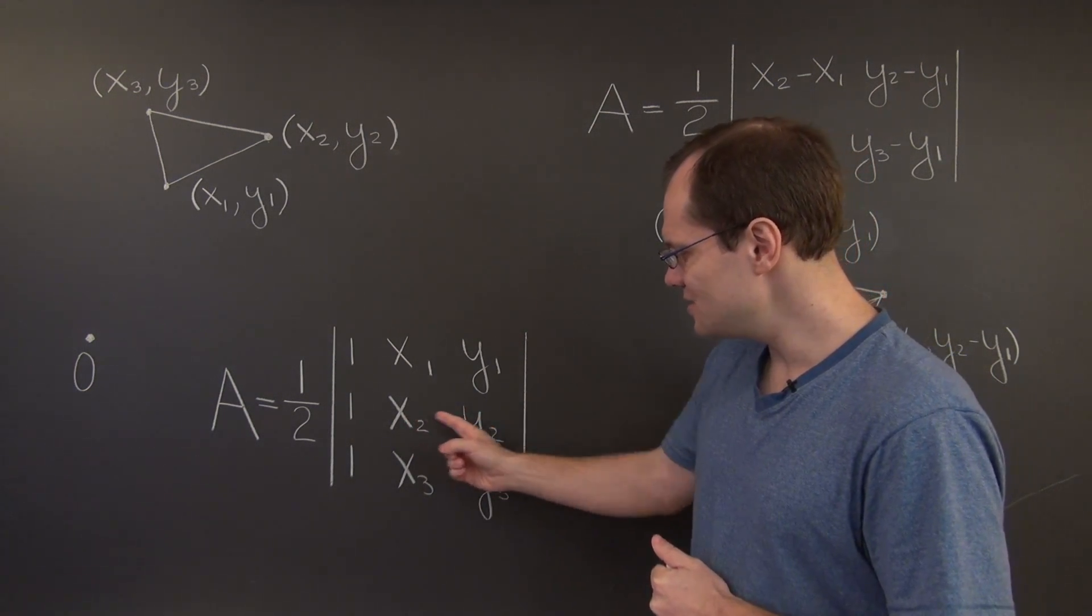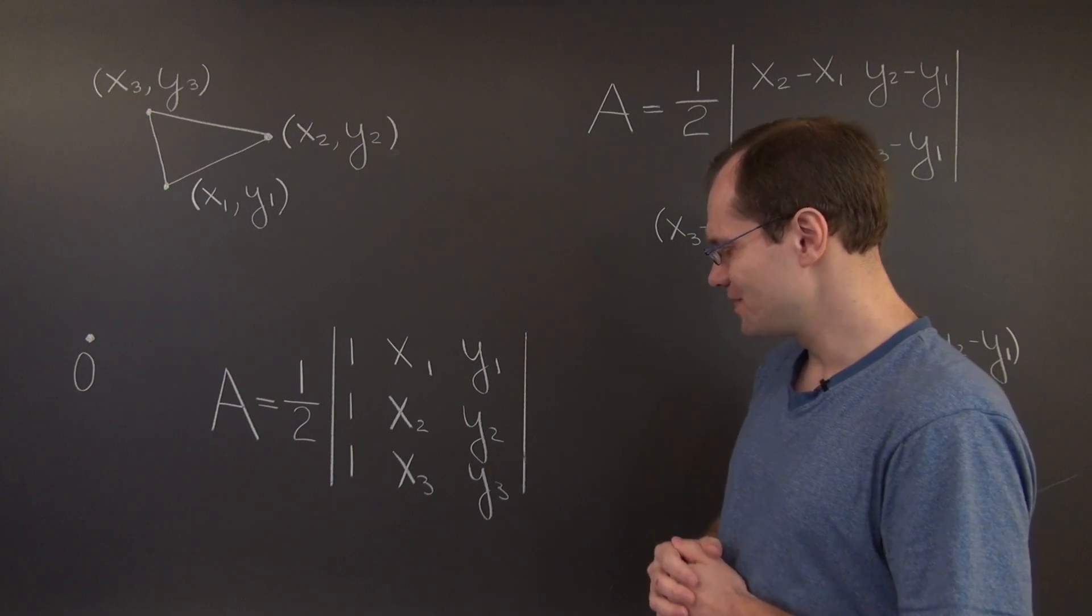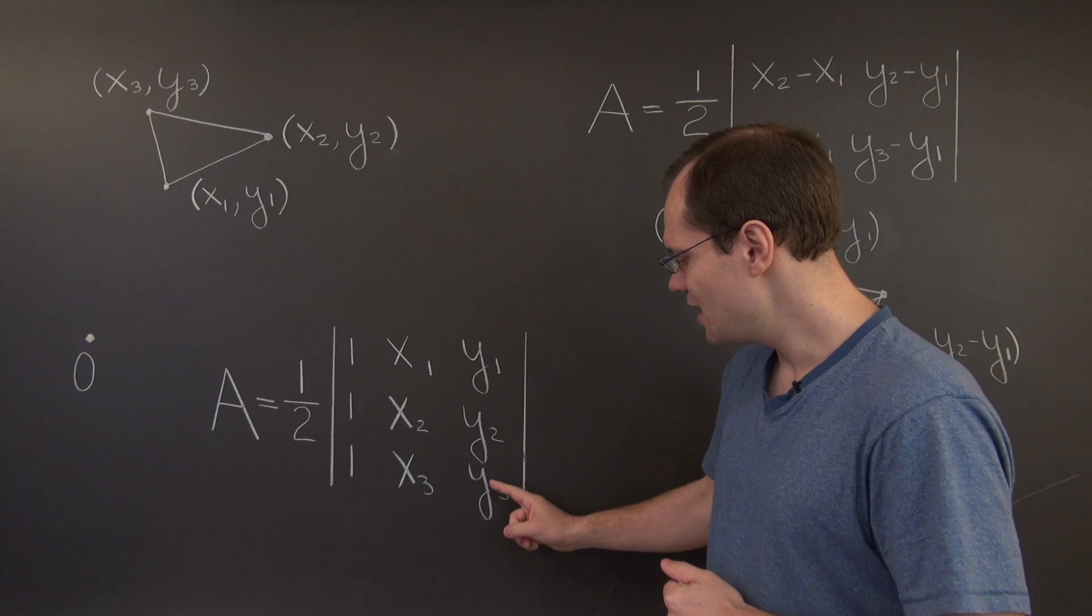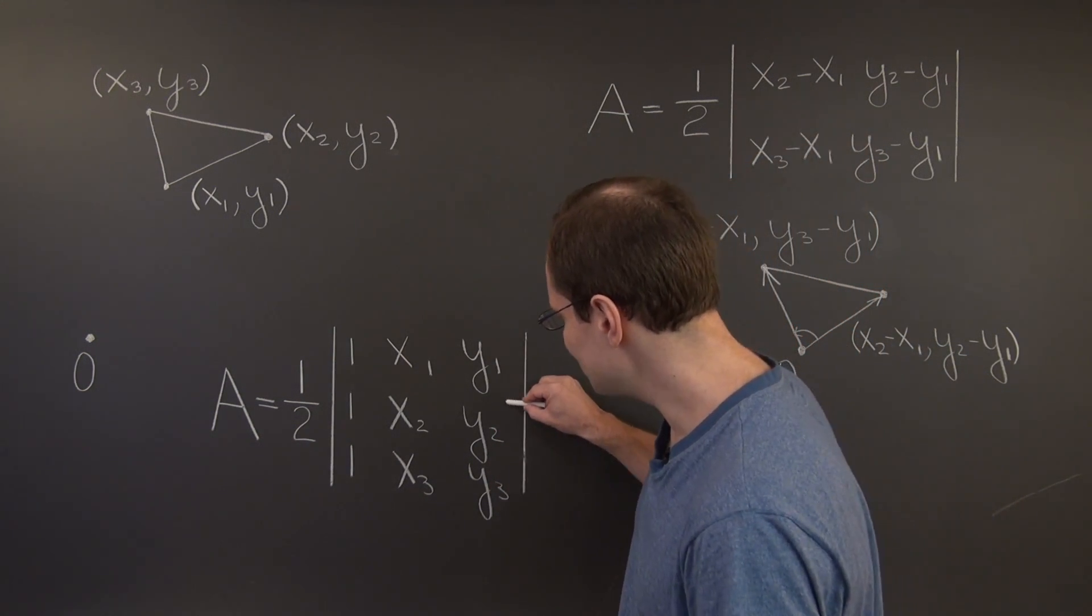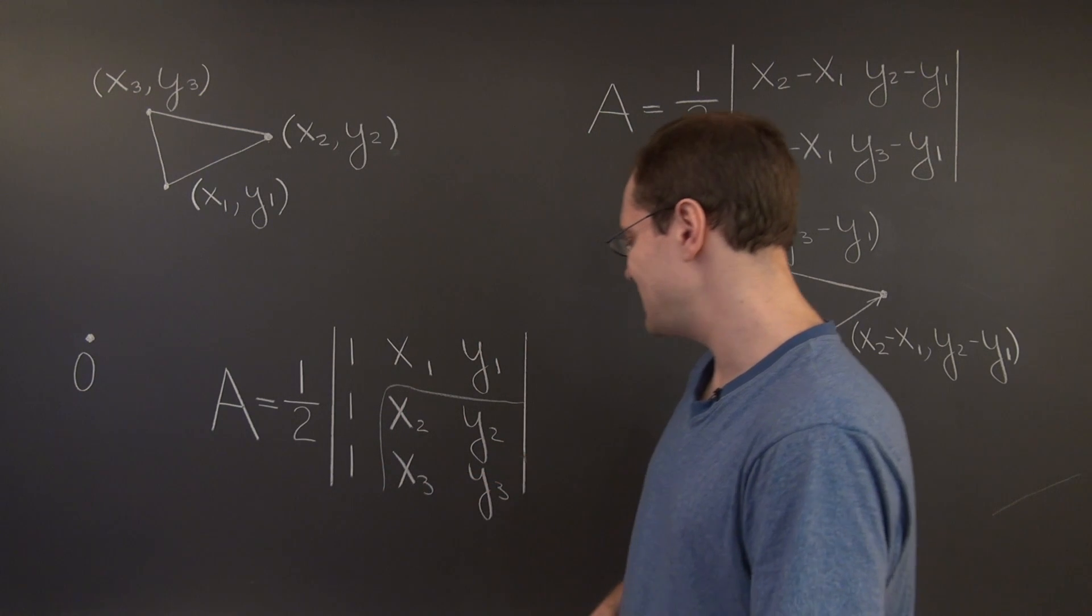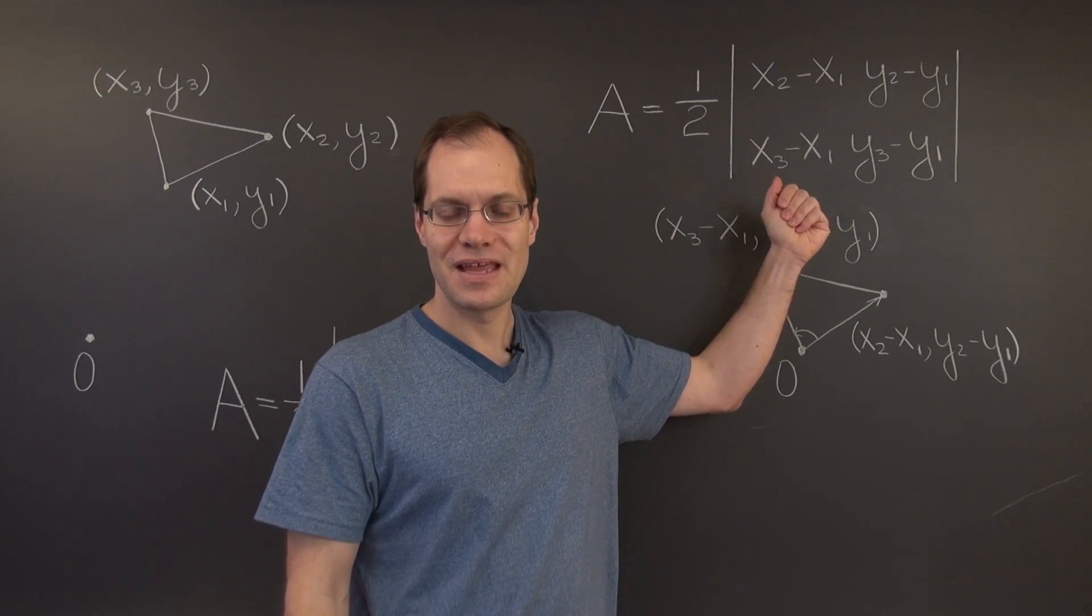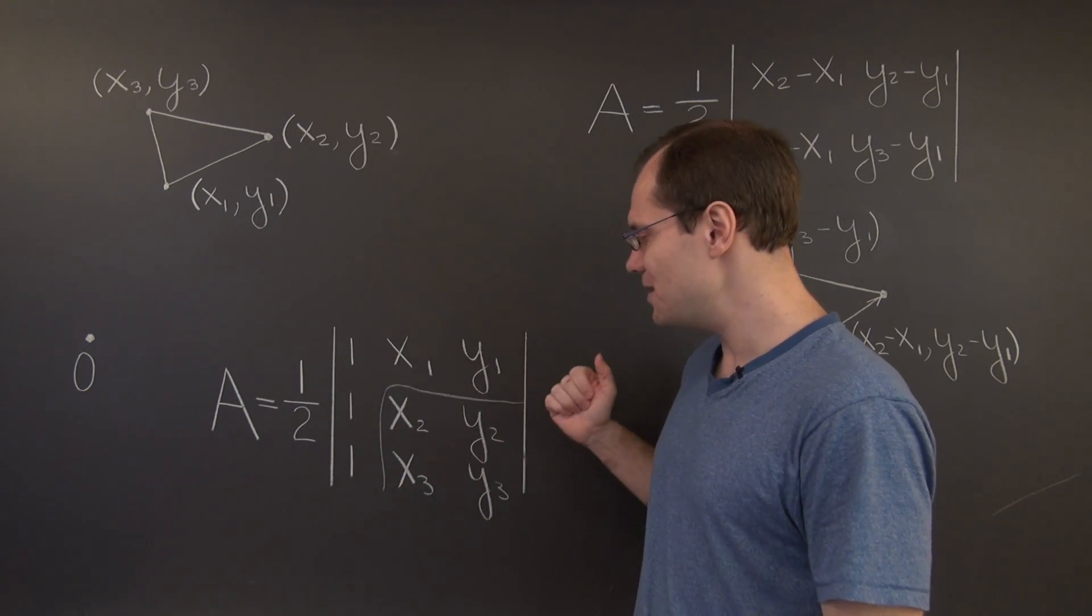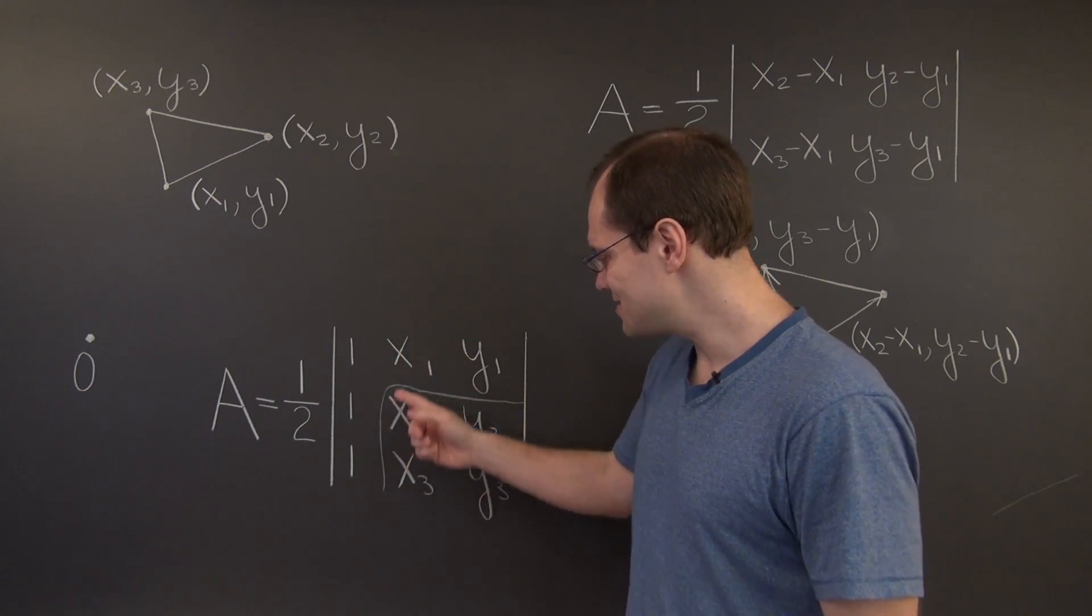And in these two locations we'll have x2 minus x1 and y2 minus y1. And here in these two entries we'll have x3 minus x1 and y3 minus y1. In other words, this submatrix right here will be this very matrix.